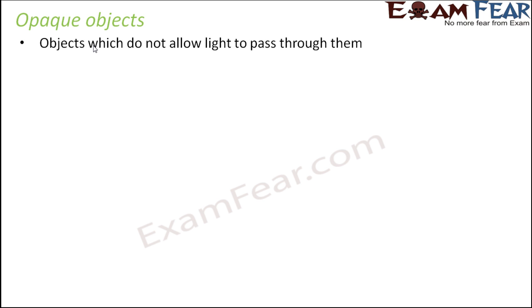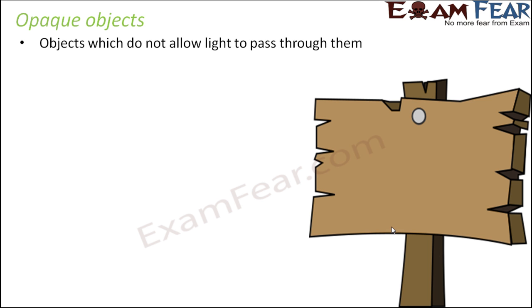The third type is opaque objects. These are objects which do not allow light to pass through them at all — they completely block light. Think of a wooden board: when light falls on it, you are not able to see whatever is present exactly behind the board, because the wooden board blocks light and doesn't allow light to go beyond it. So what happens to the light that falls on the wooden board? That light either bounces back or gets absorbed by the board. In opaque objects, light doesn't pass through them at all — the light either gets reflected or gets absorbed.